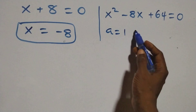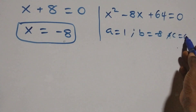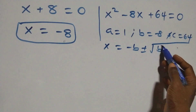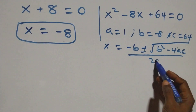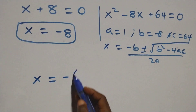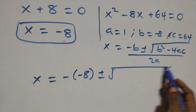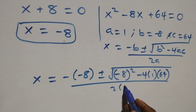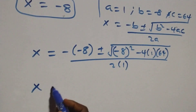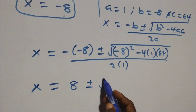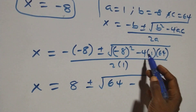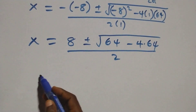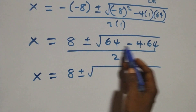Solving on this side, we have x equals to minus 8, which is a real solution. And here we have a quadratic equation where a equals to 1, b equals to minus 8, and c equals to 64. Then apply the quadratic formula which is x equals to minus b plus or minus square root of b squared minus 4ac over 2a. So we have x equals to minus minus 8 plus or minus square root of minus 8 squared minus 4 times 1 times 64, all over 2 times 1.